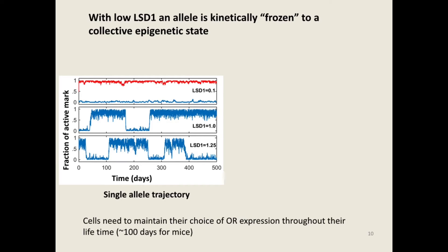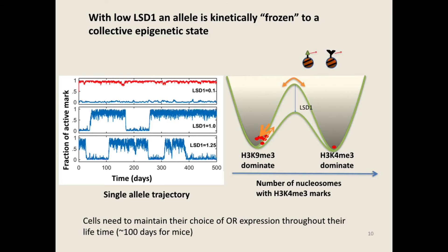Now let's first look at the simulation results with constant LSD1 concentration. Here shows typical trajectories of one allele. When LSD1 is low, an allele starting with either H3K9 trimethylation or H3K4 trimethylation dominant state likely remains at that state for a long period of time. When the LSD1 concentration increases, one starts to see the allele jump back and forth between the two epigenetic states. The higher the LSD1 concentration, the higher the jumping frequency. Therefore, cells need to have very low levels of LSD1 to maintain the OR choice. It is analogous to thermal fluctuations in a double-well potential — a higher barrier prevents transitions between the two wells.